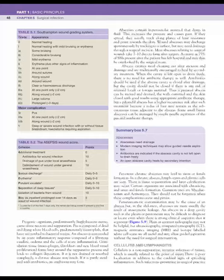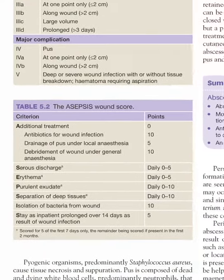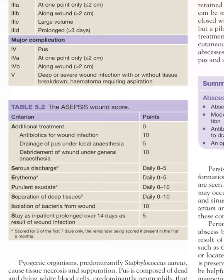To determine whether a surgical site infection is severe, we use the ASEPSIS score: A for additional treatment, S for serous discharge, E for erythema, P for purulent exudate, S for separation of deep tissues, I for isolation of the microorganism, and S for prolonged stay more than 14 days. For additional treatment: antibiotic therapy scores 10 points, local drainage under local anesthesia scores 5 points, and debridement under general anesthesia scores 10 points.